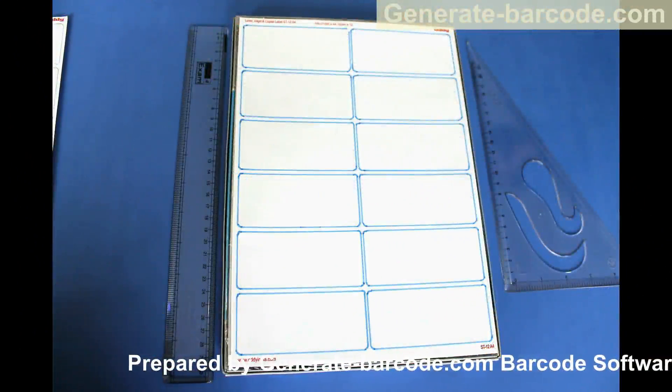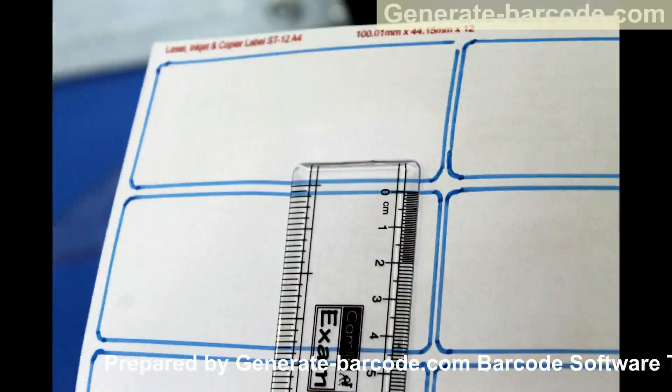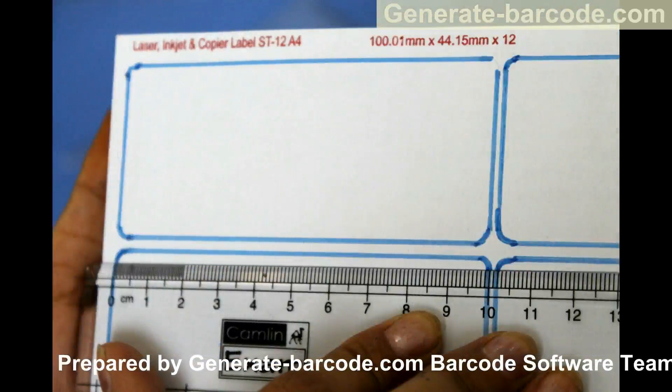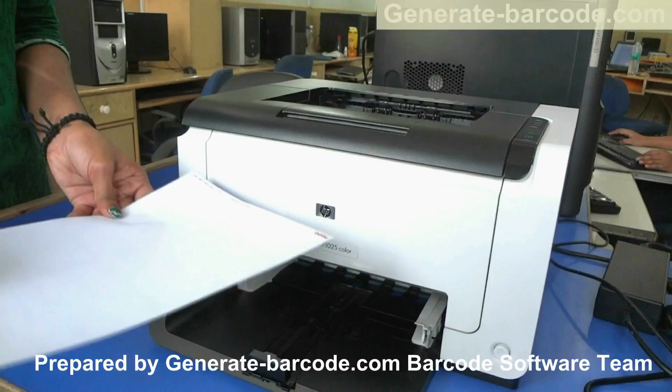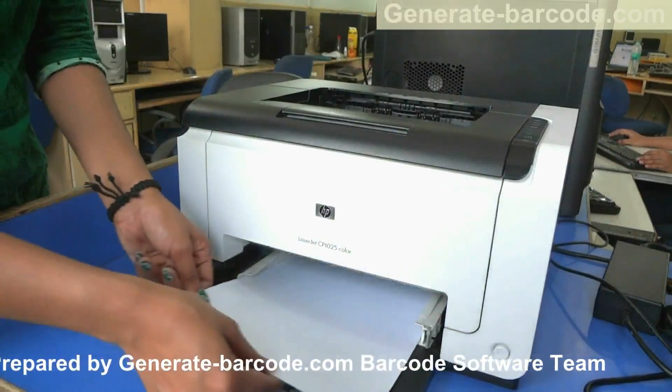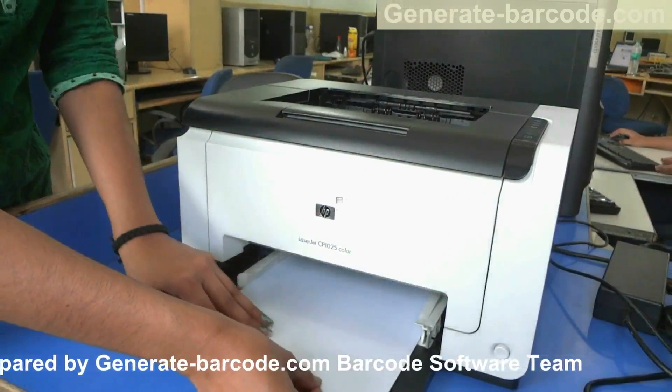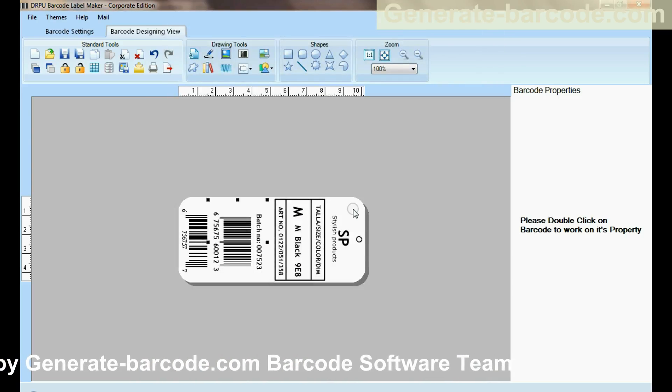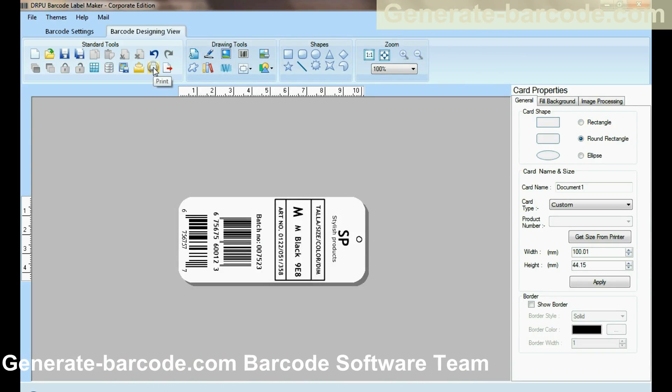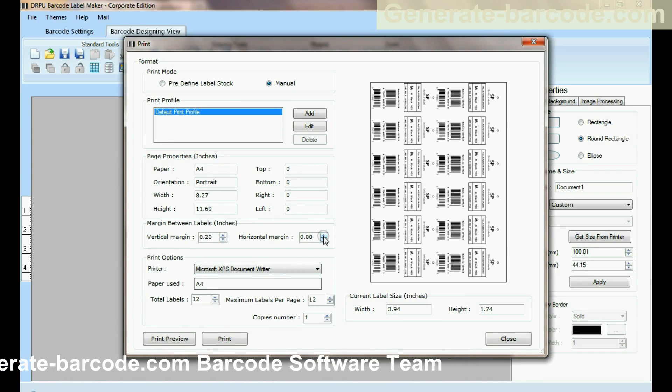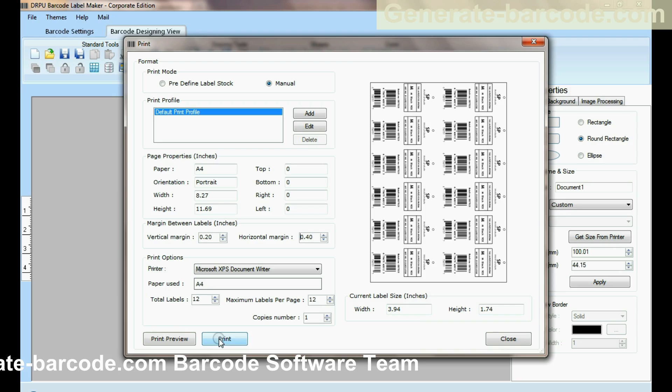The size of this label is 100.01mm by 44.15mm. Put your sheet in the printer. Design the barcode label as per your requirement. Go to print for printing settings. Adjust the number of labels according to your sheet. Click on the print button.